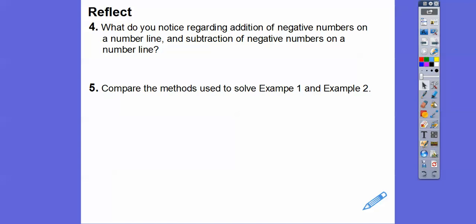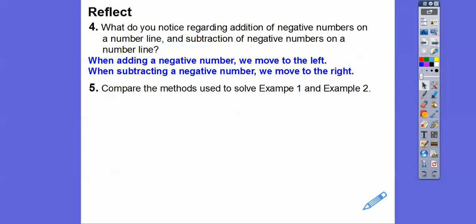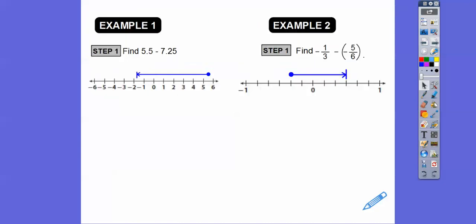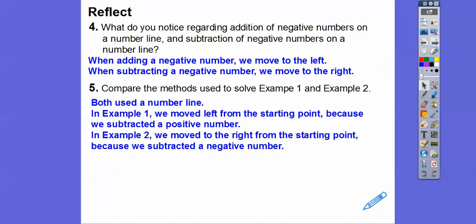What did you notice about adding versus subtracting negative numbers on a number line? When we added negative numbers, we moved to the left. When we subtracted negative numbers, we moved to the right. Comparing examples 1 and 2: in example 1 we subtracted 7.25 — a positive number — so we moved left. In example 2 we subtracted negative 5/6, so we moved right. Remember, we add the opposites.